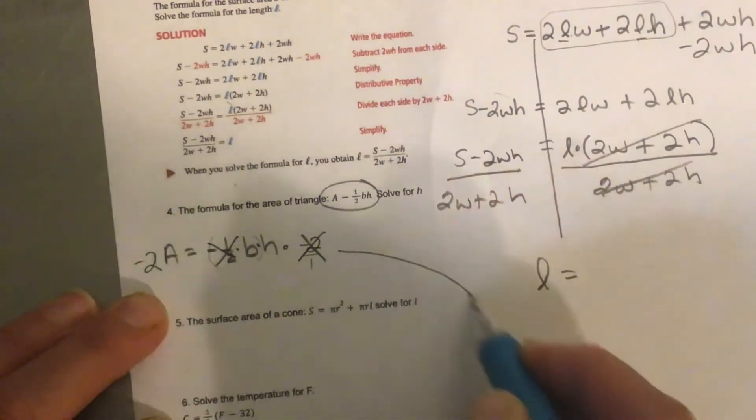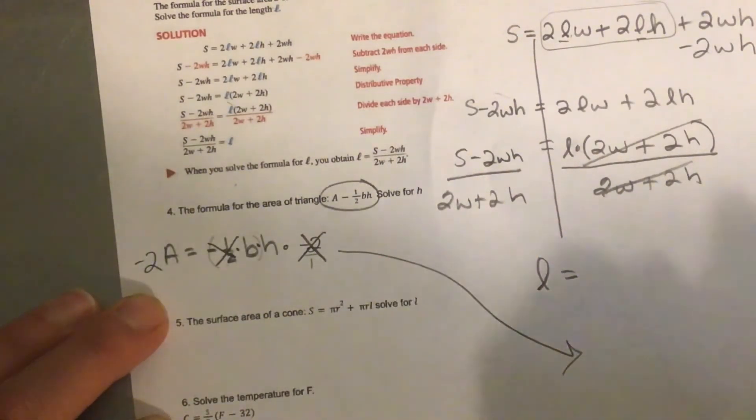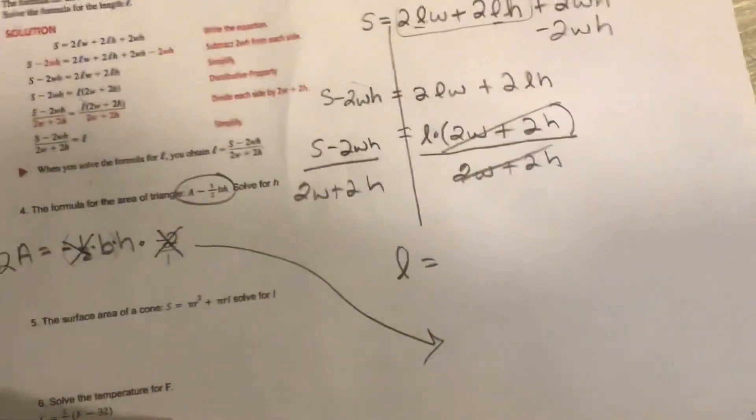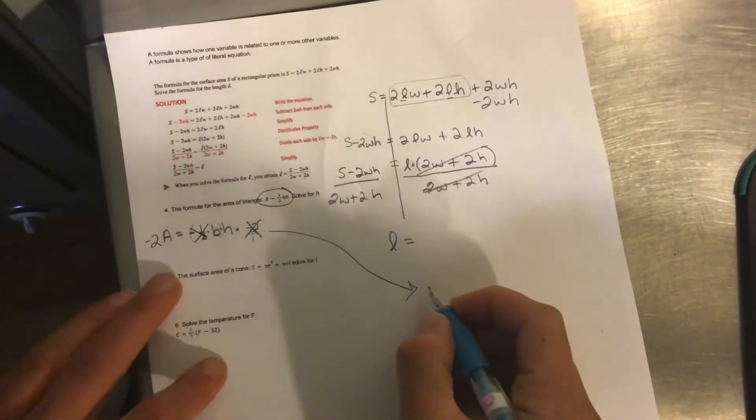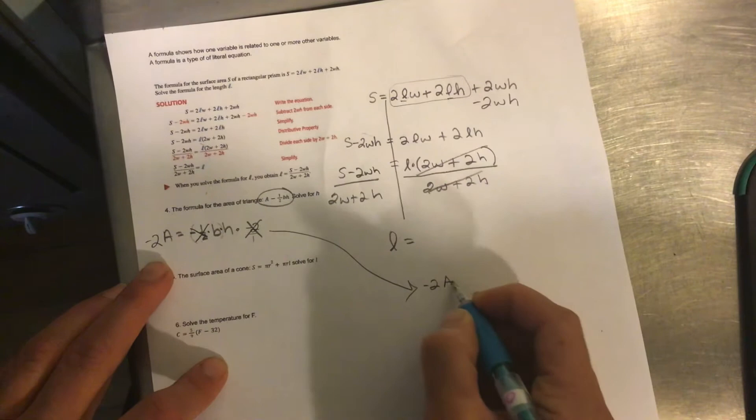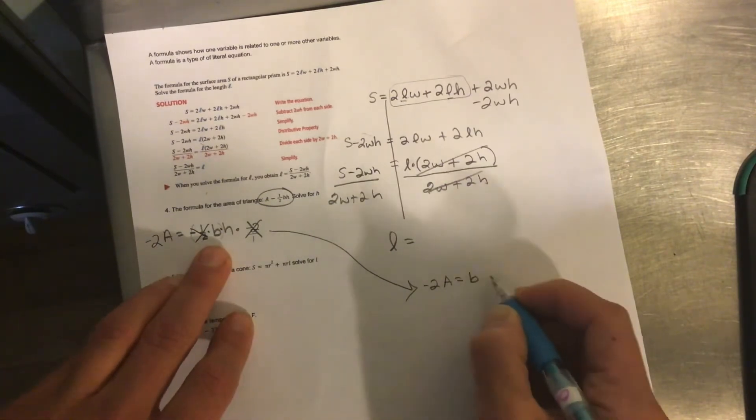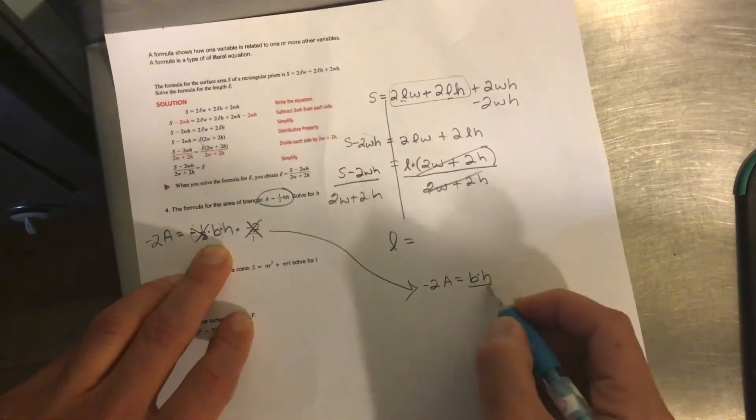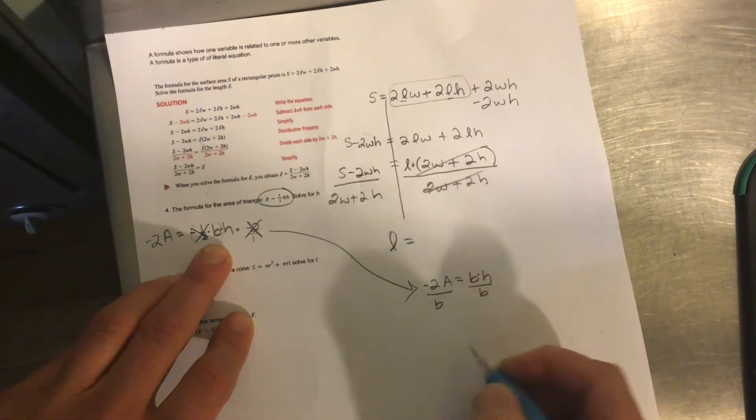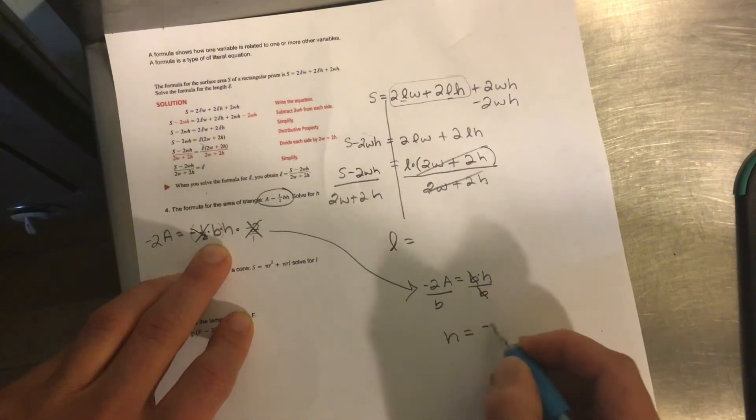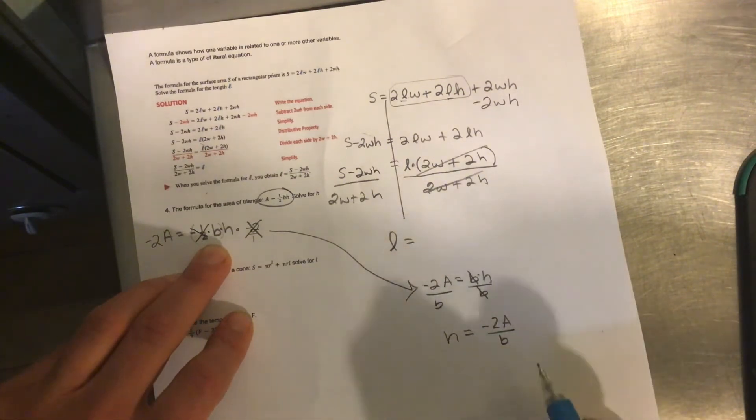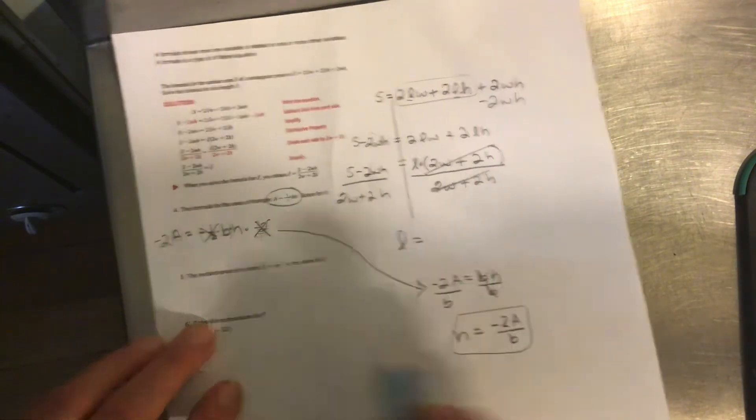So now I've got, I'm going to move this over there. For some reason, this printed off really small. So I've got negative 2A equals base times height. And if I want to solve for the height, divide by the base, divide by the base. And so my height equals negative 2A all divided by the base.